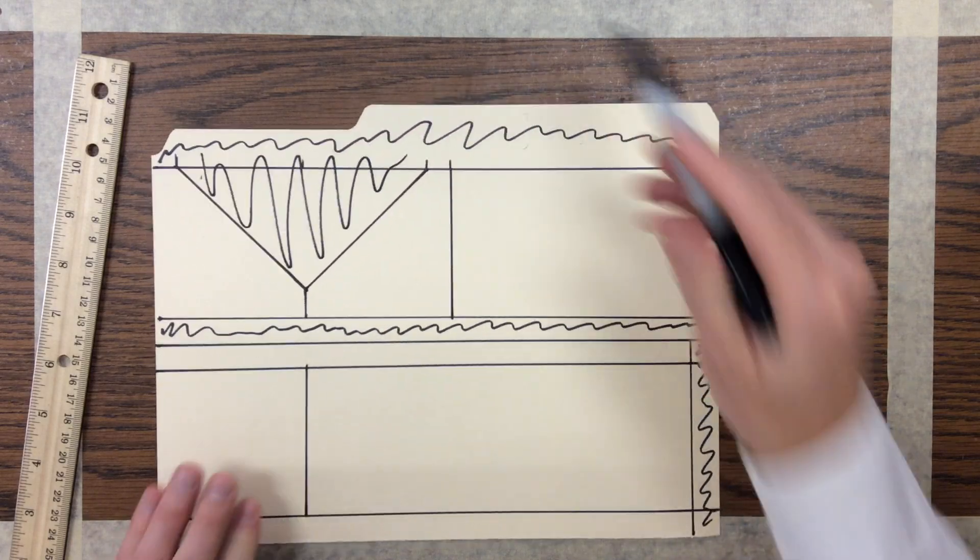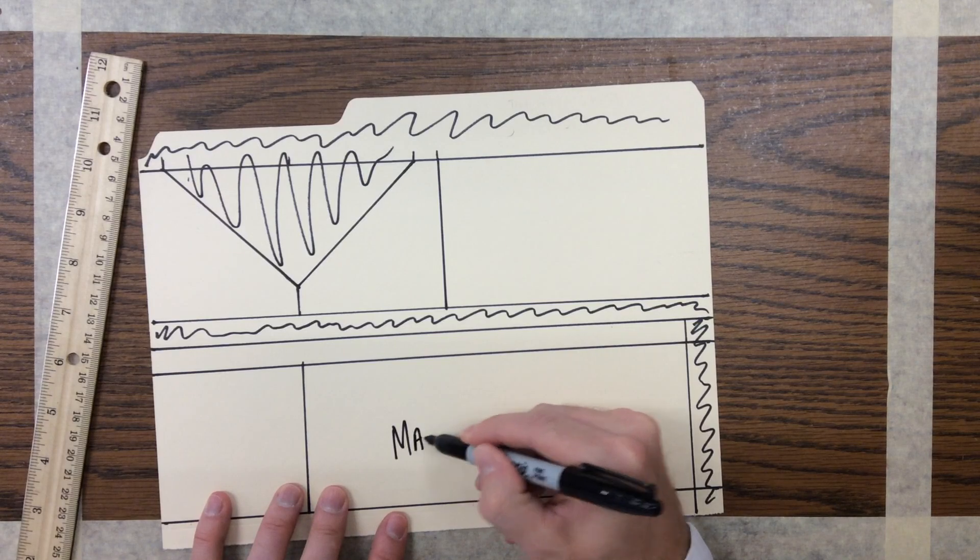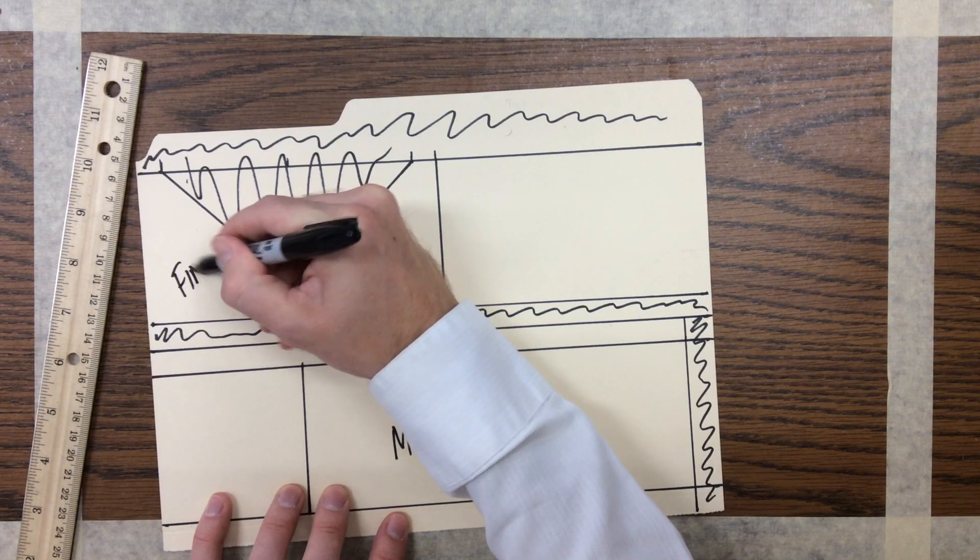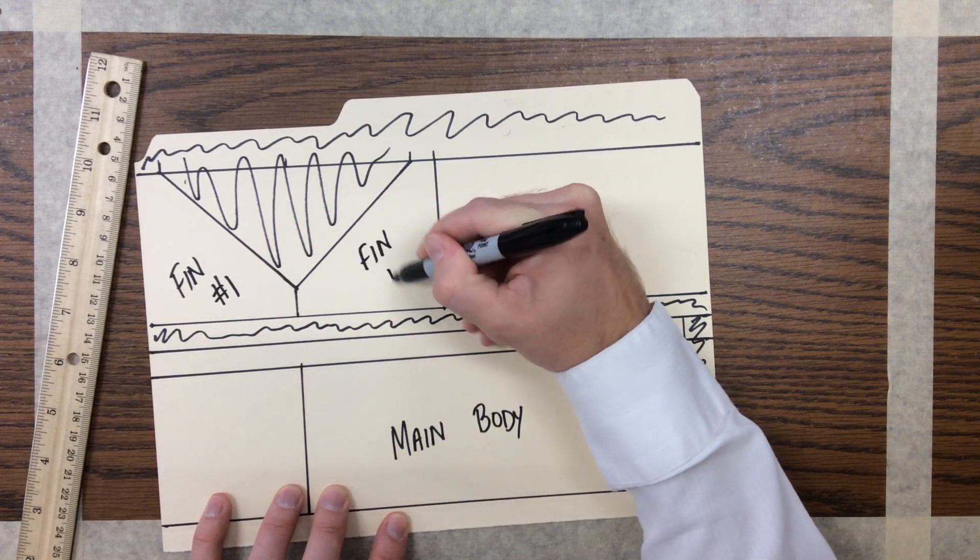In here is dead space. So we have your main body, fin number one, and fin number two.